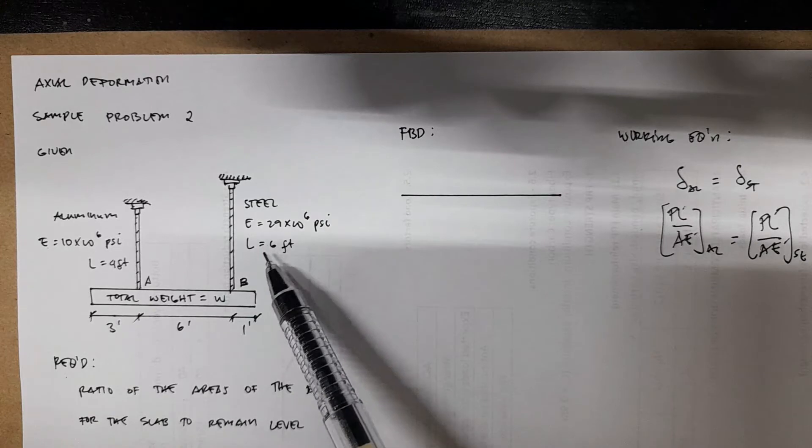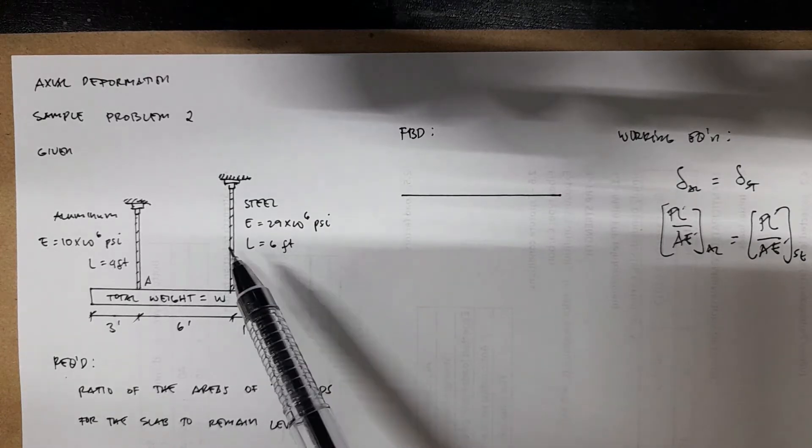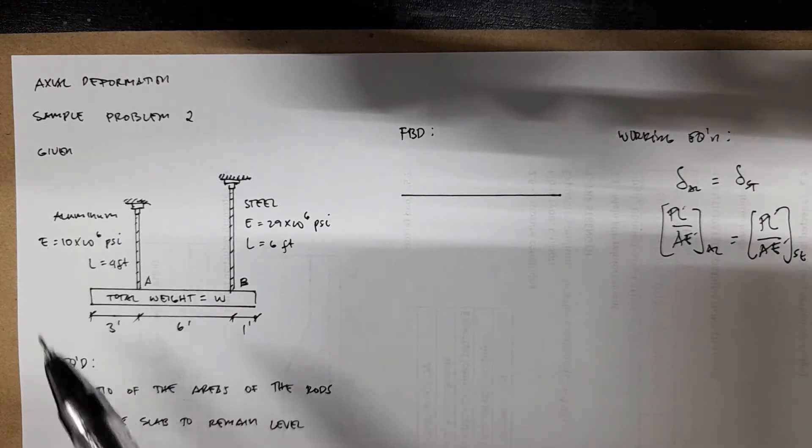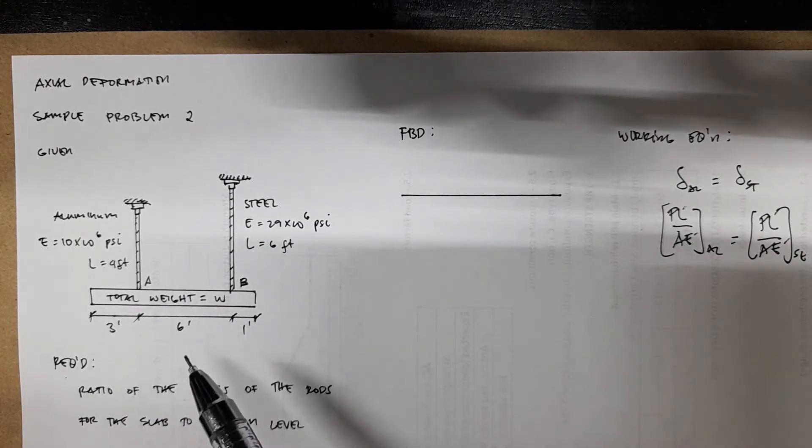The dimensions are given: the length equals 6 feet for steel, E equals this value, and then you have 4 feet for aluminum with E at that value for aluminum.